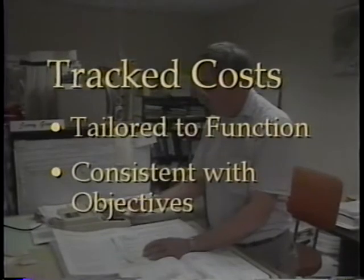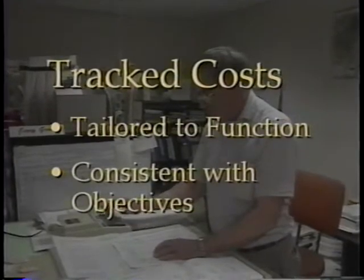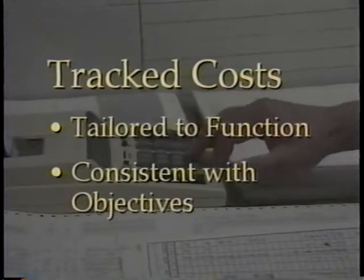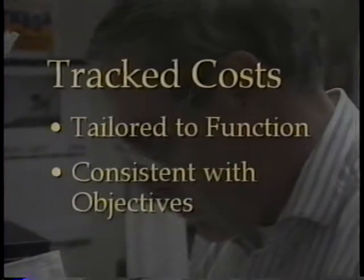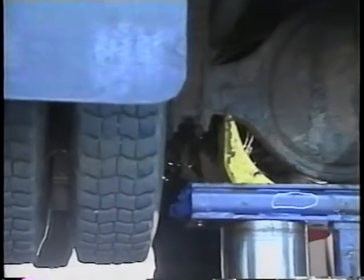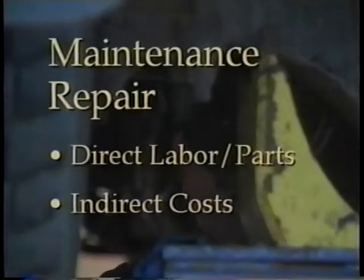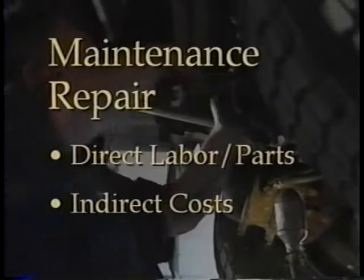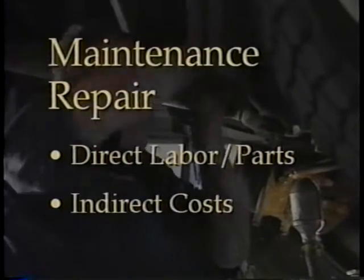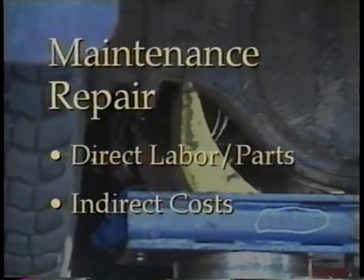Costs to be tracked in the cost accounting system should be tailored to line managers' functional responsibilities and be consistent with factors that have a significant effect on desired operating objectives. The first classification is maintenance repair, which would include direct labor and parts charged directly to equipment units, direct charges, and significant volumes of indirect costs, such as miscellaneous parts and shop overhead.